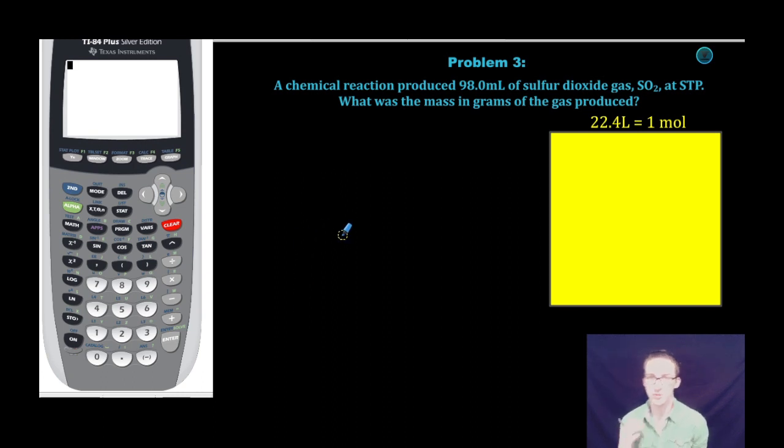Alright, let's take a quick look at problem number three. A chemical reaction produced 98.0 milliliters of sulfur dioxide gas at STP. What was the mass in grams of the gas produced?